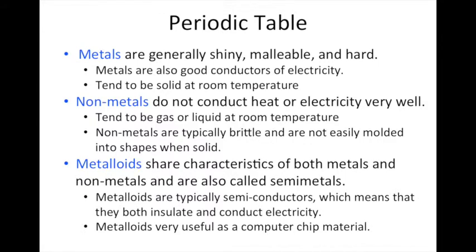Metalloids tend to have some characteristics of both metals and nonmetals. They tend to be very good semiconductors, so they conduct electricity and they're good insulators. And the properties of metalloids tend to make them very useful in things like computer chips. Silicon is a metalloid and it is often used to make a lot of the computer chips that we use.